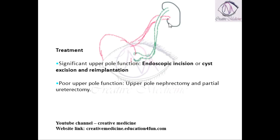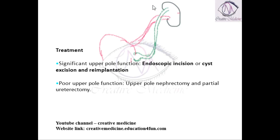If the upper pole function is poor, then upper pole nephrectomy is done along with partial ureterectomy. This ureter is removed and upper pole nephrectomy can also be performed.